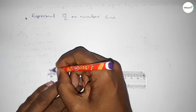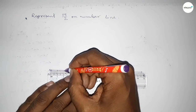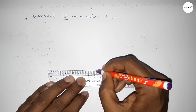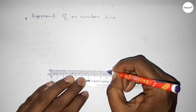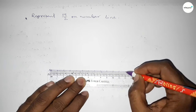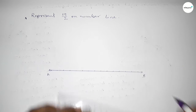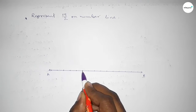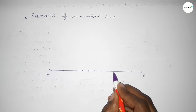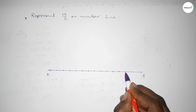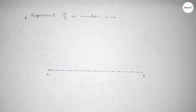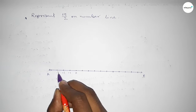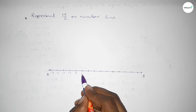Now we have to mark the numbers on the line using a scale. Marking the numbers carefully to understand perfectly. The starting number is zero; on the left side: minus one, minus two, minus three, minus four; and on the right side: